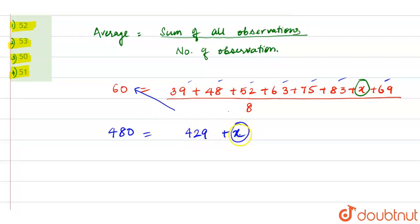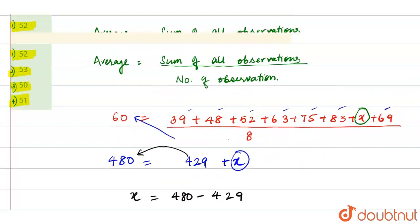Now, we will find x's value. X equals 480 minus 429. Therefore, x's value will be 51. So x's value is 51.